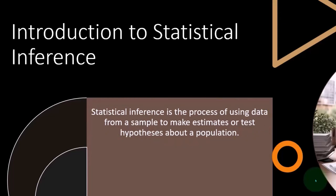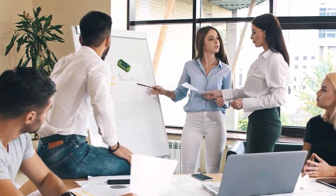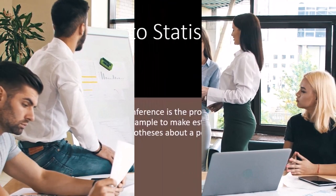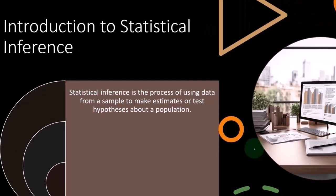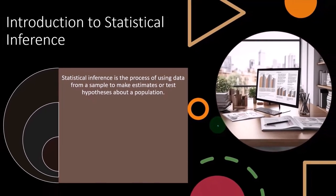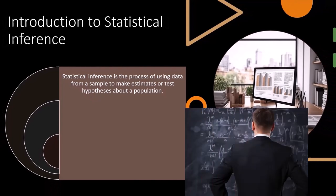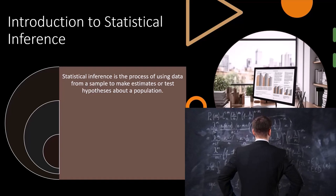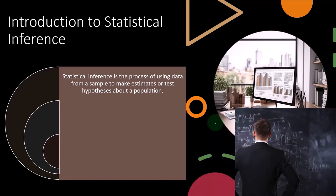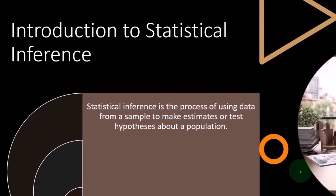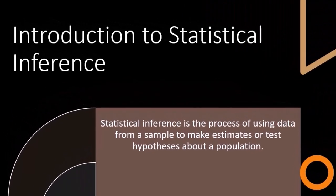You will recall from prior presentations we talked about two major buckets or categories of statistics. The first bucket is where we know all the information — we have all the data. Our goal is to organize that data to draw meaning from it using mathematical tools like the average, the mean, the median, the quartiles, and pictorial tools such as the box plot and the histogram.